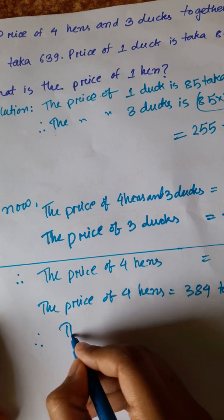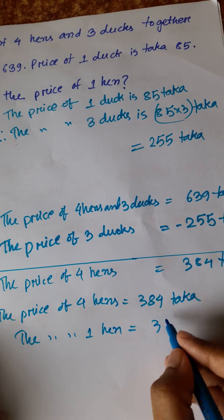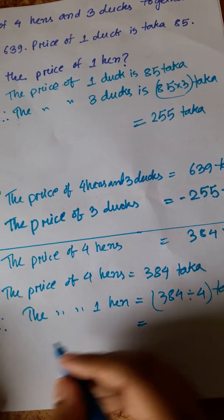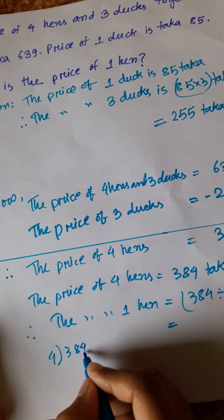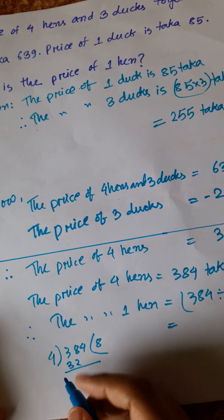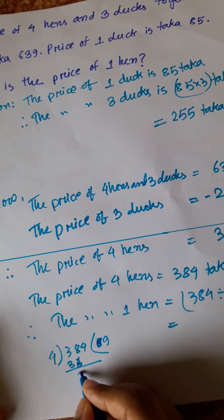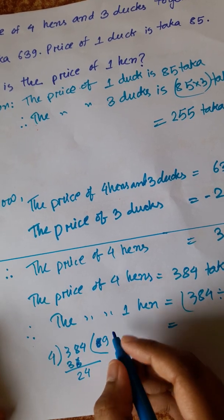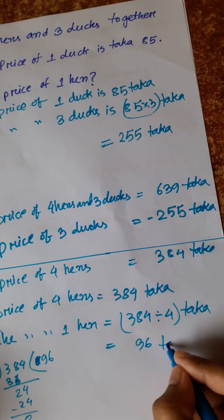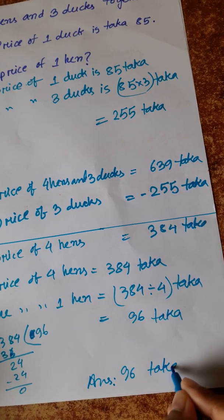Therefore price of 1 hen equals 384 divided by 4 Taka. 384 divided by 4: 4 eights are 32, 4 nines are 36, 4 sixes are 24 — equals 96 Taka. So the answer is 96 Taka.